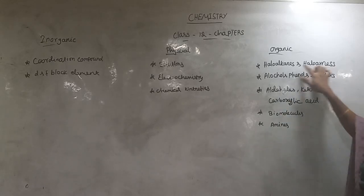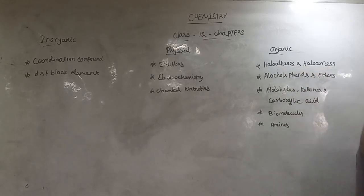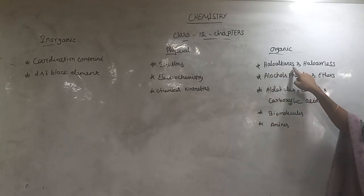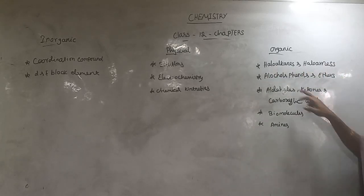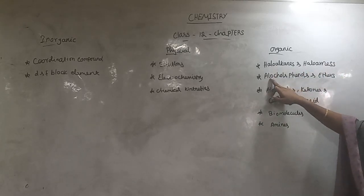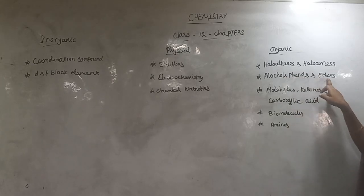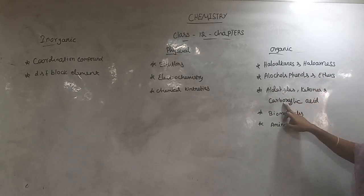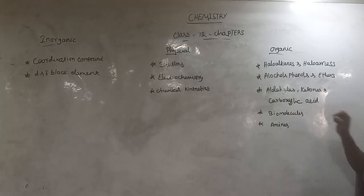First, we have Haloalkanes and Haloarenes. Next is Alcohols, Phenols, and Ethers. Then Aldehydes, Ketones, and Carboxylic acids. After that, Biomolecules and Amines.